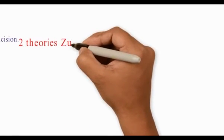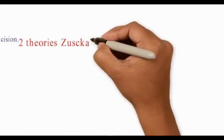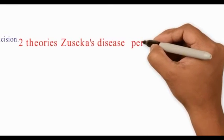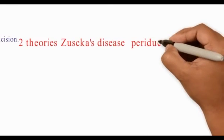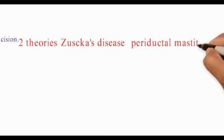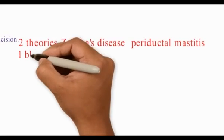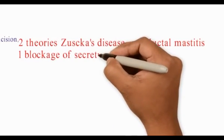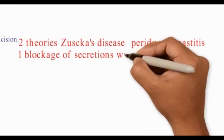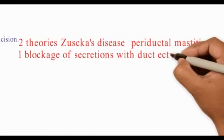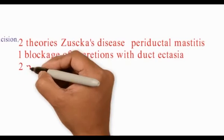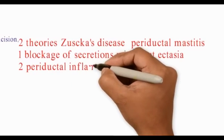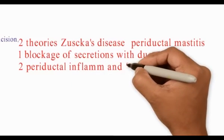The two theories to explain Zuska's disease or periductal mastitis are: first, blockage of the duct with secretions and duct ectasia with extrusion of these secretions and formation of an abscess; and second, periductal fibrosis and inflammation which causes duct ectasia, stasis of secretions, and further infection.